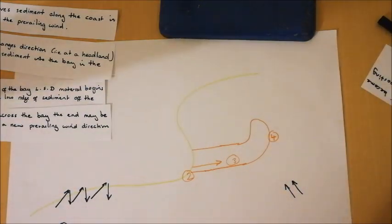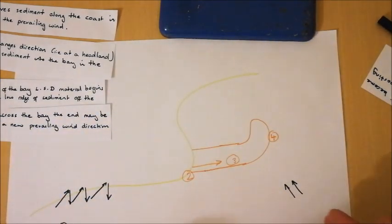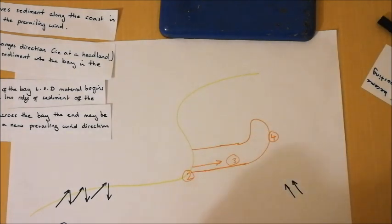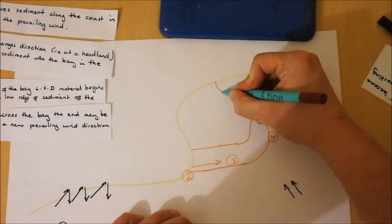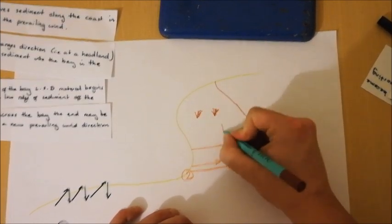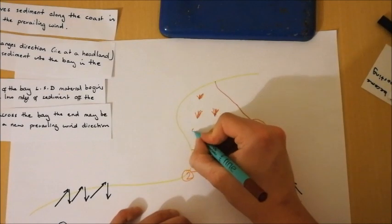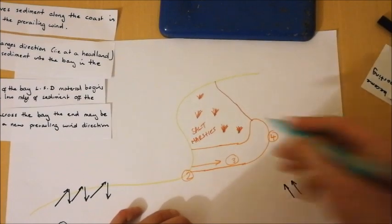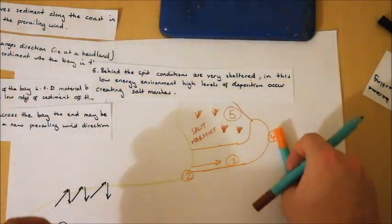Now, what we're then going to get in that area directly behind the spit is a really sheltered environment. Waves coming in from here are going to be hitting the spit first. So therefore this area directly behind is going to be really low energy, kind of forms a natural harbour. That low energy means that we have a huge amount of deposition occurring behind the spit. And what we would expect to find in here is environments like salt marshes, caused by deposition of virtually all silt, mud and other sediment. And these places only occur in really low energy environments. Again, we can number that, we put a five.